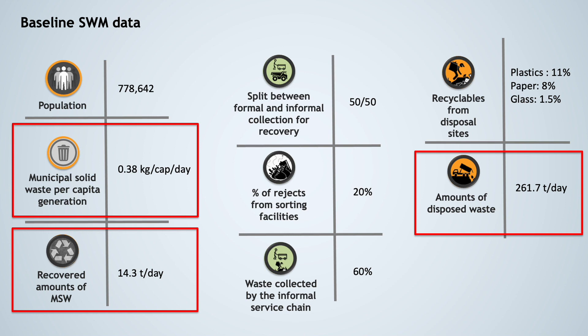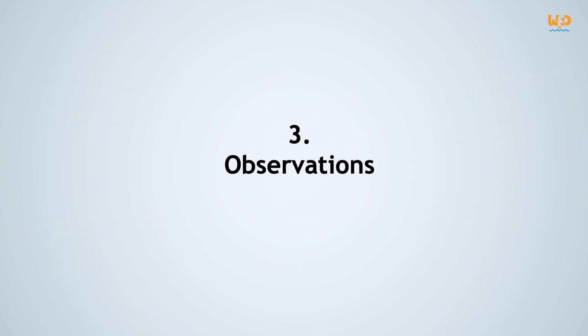The WACT assessment estimates that the waste generation rate is 0.38 kg per capita per day, which is typical of a lower-middle-income country and corresponds to about 296 tonnes per day of waste produced in Megalopolis. Around 14 tonnes per day of waste are recovered, and 260 tonnes per day are sent to a disposal facility. This gives a collection coverage of 93%.